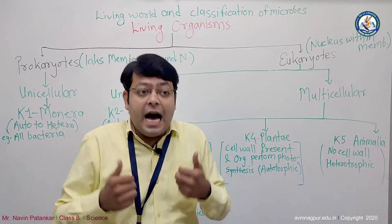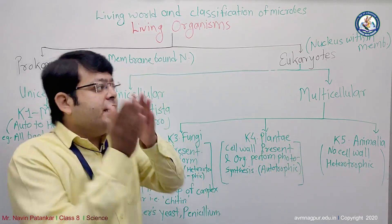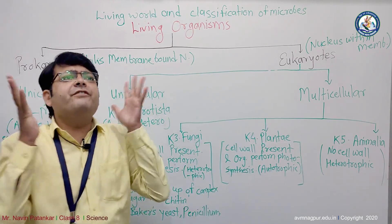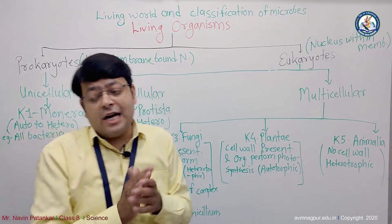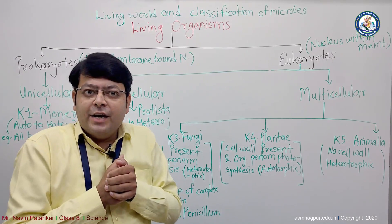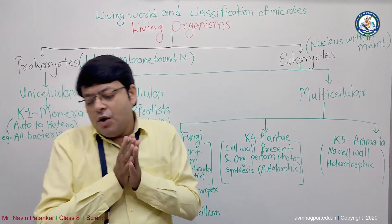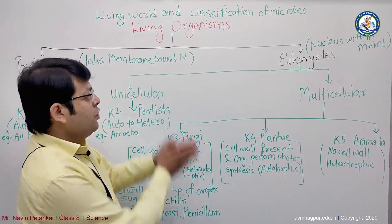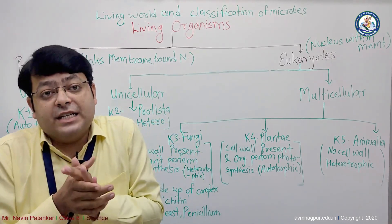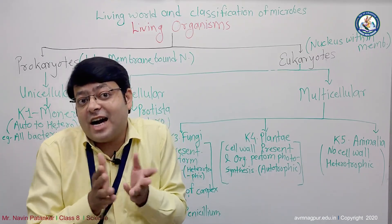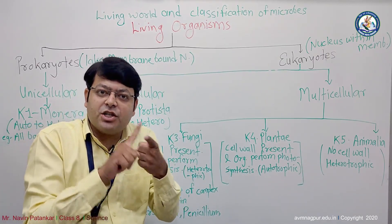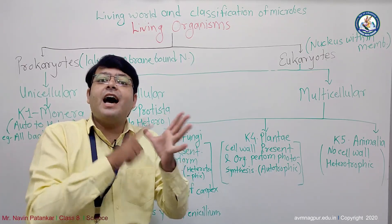As of now, we all follow the five-kingdom classification system by R.H. Whittaker. A very common question that may arise is: why are viruses not included in the five-kingdom classification system? The answer is that viruses are not made up of living things — that is the reason why viruses are not included. The five kingdoms are: Monera, Protista, Fungi, Plantae, and Animalia. Thank you.